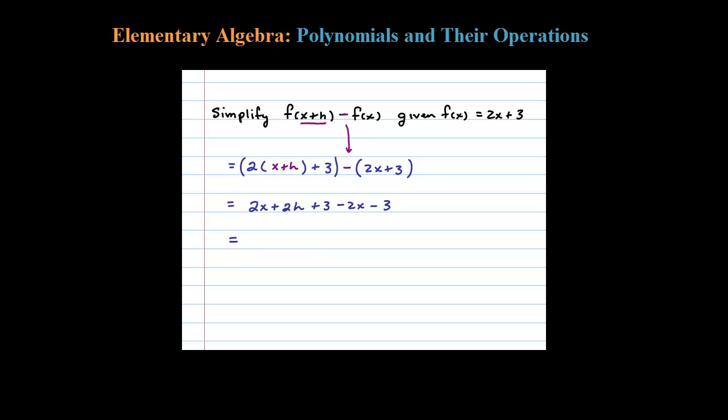After that, you collect like terms. Notice I have 2X and -2X, those add to zero. Also I have 3 and -3, so those add to zero as well. What's left is simply 2H. So f(X+H) - f(X) simplifies to 2H.